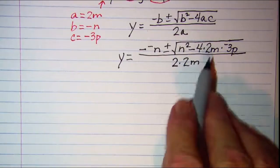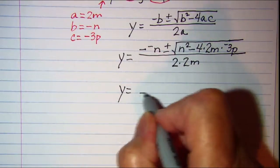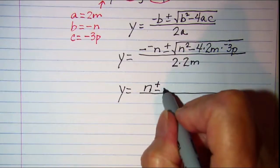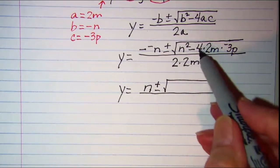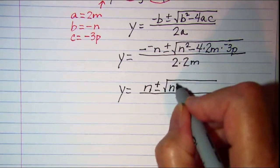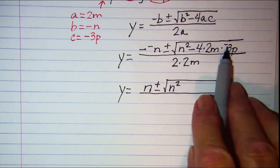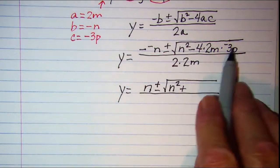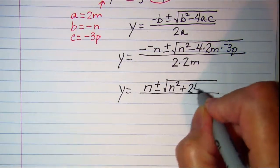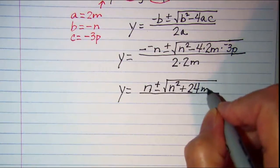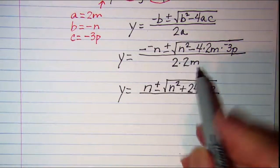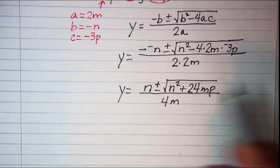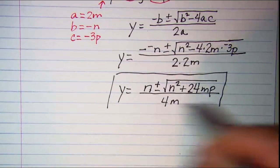Now all I need to do is simplify this a little bit. Y is equal to negative negative is a positive so we have n plus or minus square root of... Now I need to do this multiplication first so I'll just copy the n squared. I have a negative times a negative so I'll have plus here and then my constants multiplied: 4 times 2 is 8 times 3 is 24 and then mp. In the denominator I'll have 4m. And this is as simple as it can get so I'll just box that in and that's my answer.